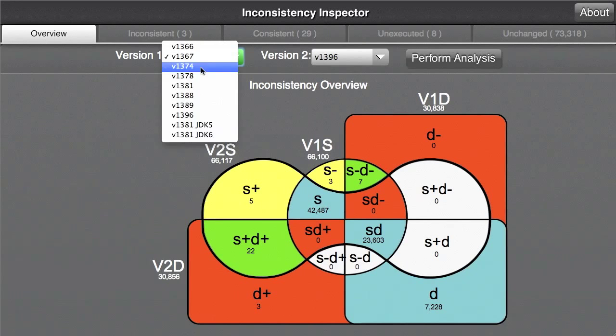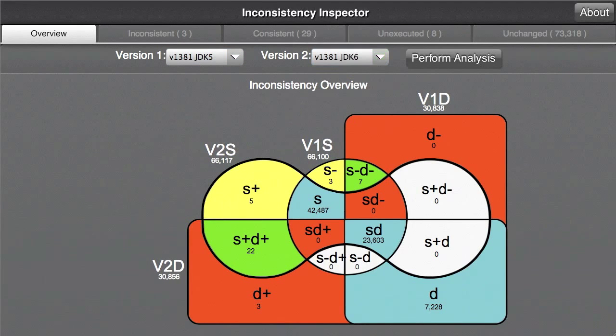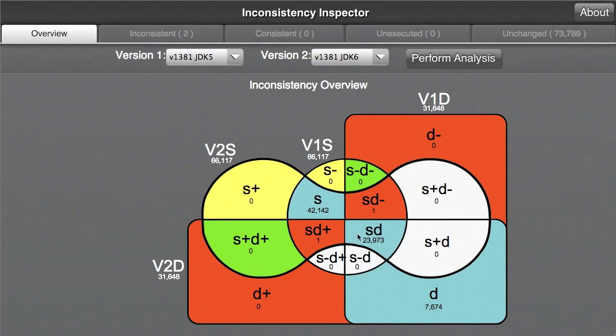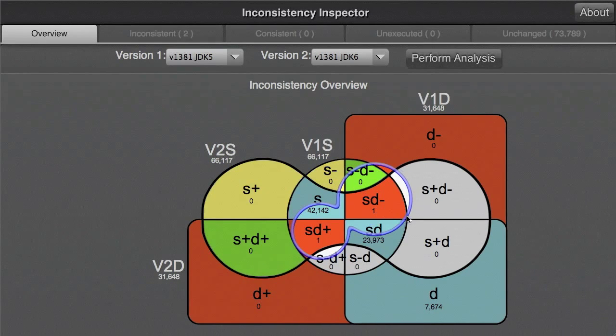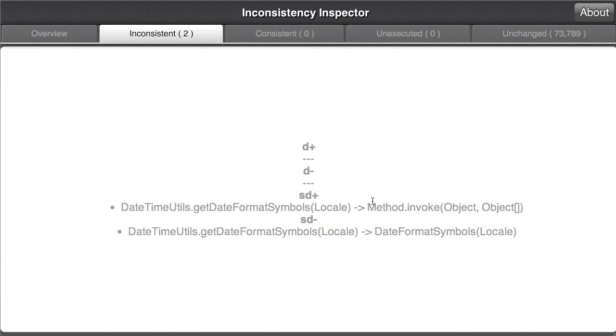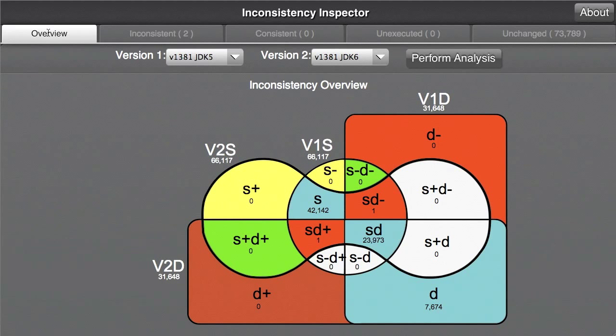Finally, we compare the same version of the system running with JDK 5 and JDK 6. Two elements appear in the inconsistent S D plus and S D minus partitions. Inspecting these directly, we can see that with JDK 5 a method is called directly, while with JDK 6 a different call is made via reflection. Thank you for watching this quick overview of our approach and demonstration of the inconsistency inspector tool.